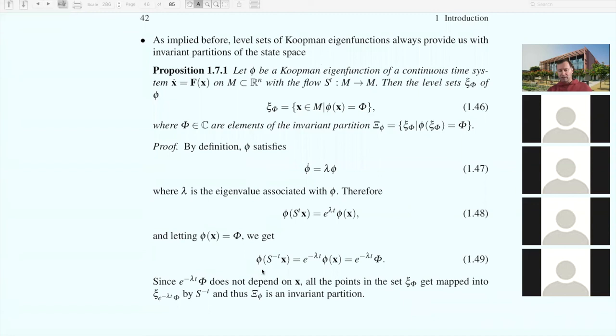Phi of x to start with was just phi. When you evaluate phi along a trajectory pulled back by time t, you get e to the minus lambda t phi. That's a constant that doesn't depend on x. So if you start with any x that has the same constant phi as the value of the eigenfunction, then at time minus t you're going to be at a set with the constant e to the minus lambda t phi. Therefore, initial conditions are mapped from one level set of phi to another. This is a very general result that says if you find a Koopman eigenfunction, you found an invariant partition of a dynamical system.